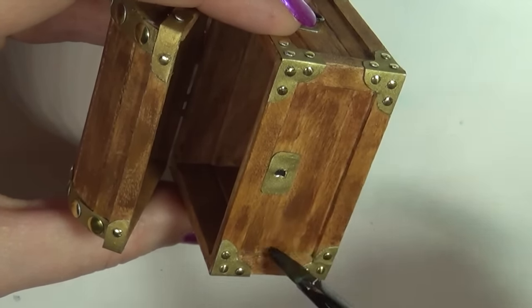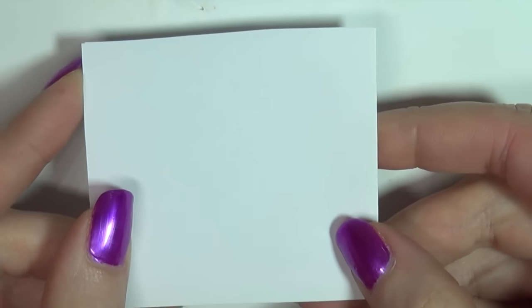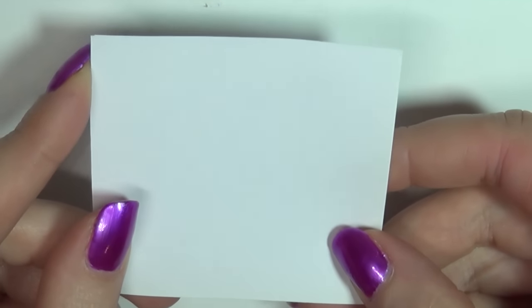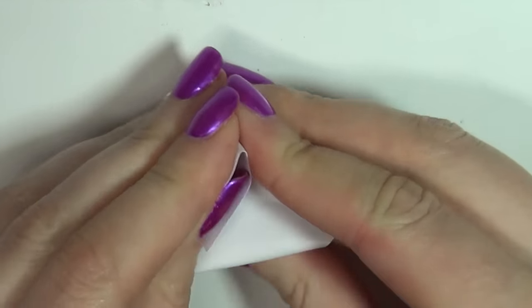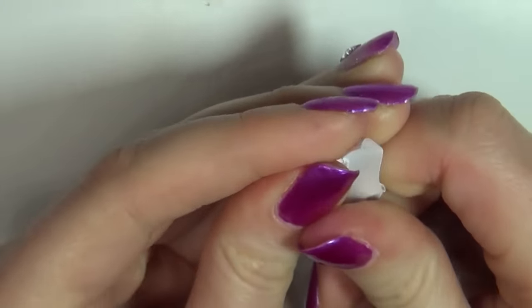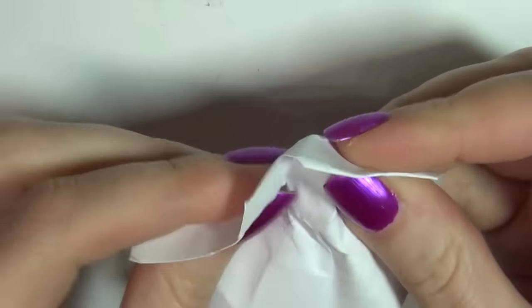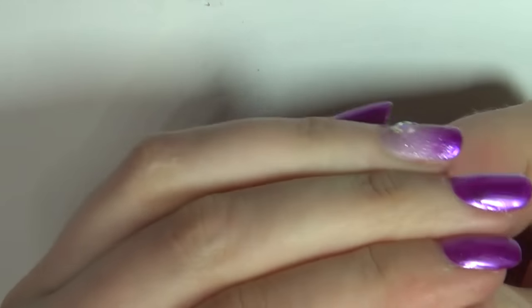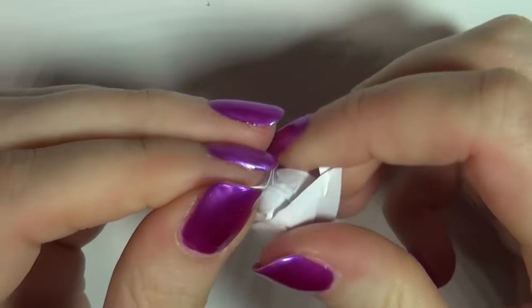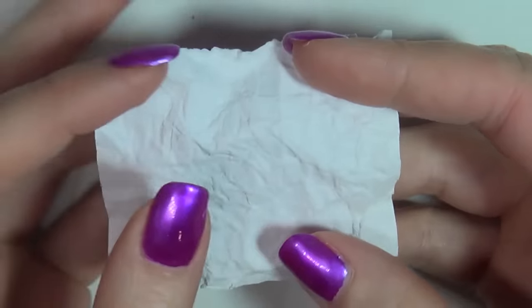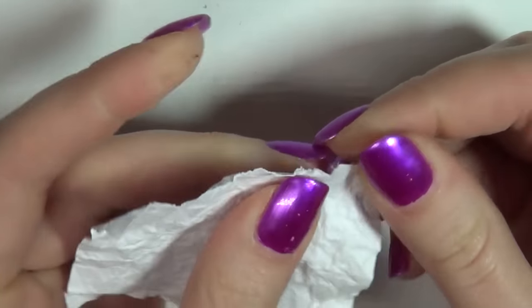While that's drying we're going to move on to our treasure map. I used some basic sketchbook paper that I crumbled up a few times to break up the fibers. Rip off any excess to get a rough edge.